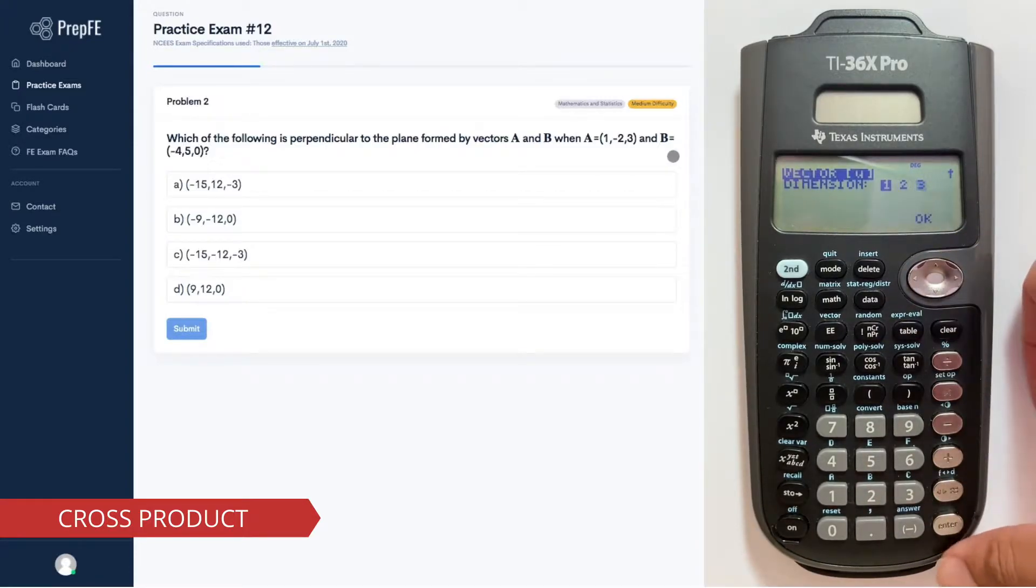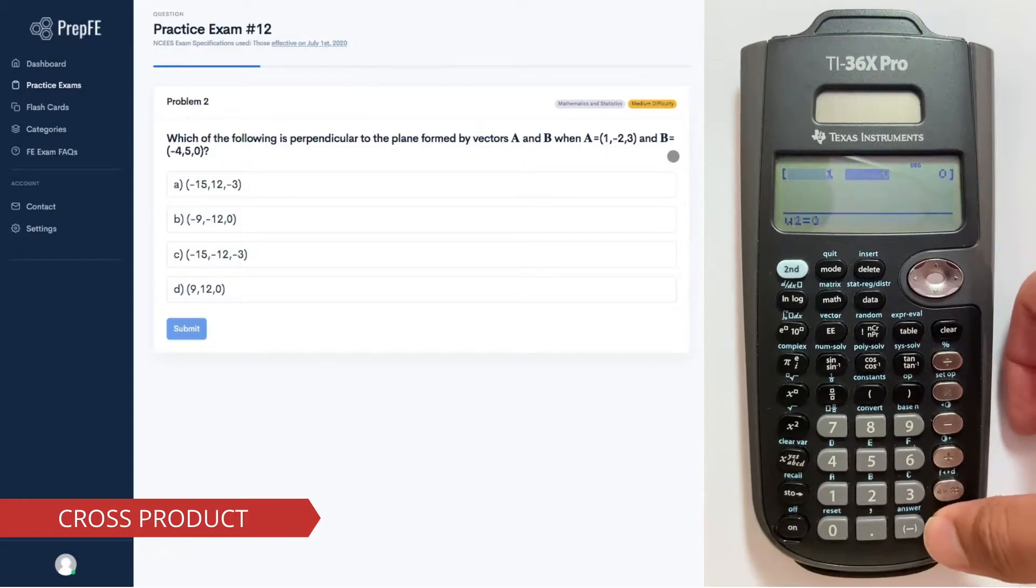This vector has three dimensions, so we select three for I, J, and K. Enter the first vector: 1, negative 2, and 3.